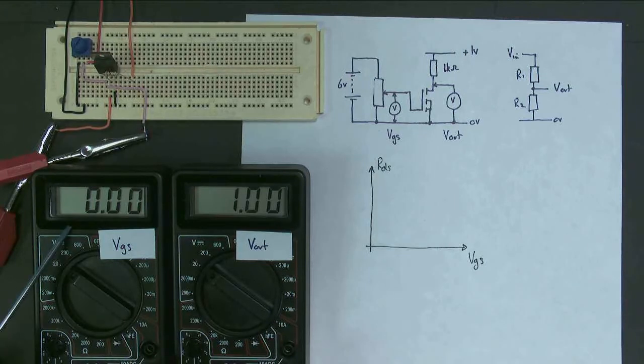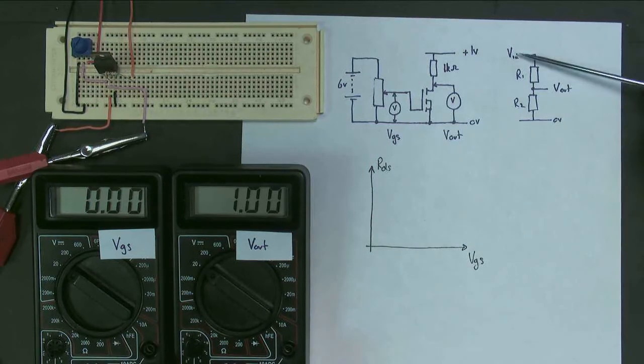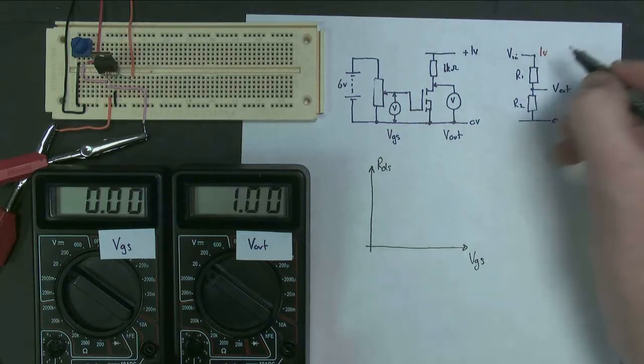So to start with, my gate source voltage is zero. My output voltage is one. My input voltage is one. I should probably write the values on here. One volt.